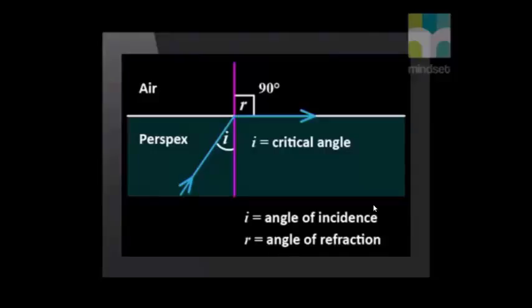If we increase the angle of incidence, we will reach a critical angle where the angle of refraction is 90 degrees. We can use Snell's law to calculate the critical angle.